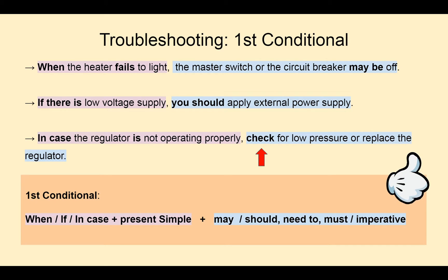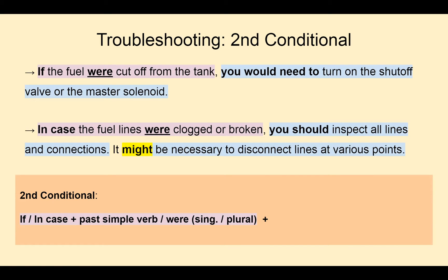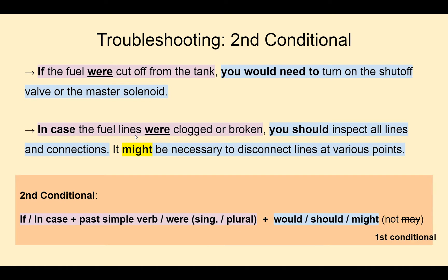It's super easy, as you can see. In the case of the second conditional, the structure starts with 'if' or 'in case' plus a past simple verb, or the past simple of 'to be', which in this case is 'were', both for singular and plural, as in: 'if the fuel were cut off from the tank', where fuel is uncountable, or 'in case the fuel lines were clogged or broken', where the fuel lines are plural. Then use 'would', 'should', and 'might' plus the main verb — not 'may', since that is for the first conditional — as in: 'you would need to turn on the shut-off valve', 'you should inspect all lines and connections', or 'it might be necessary to disconnect lines at various points'.